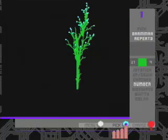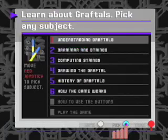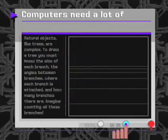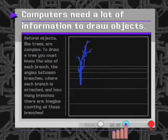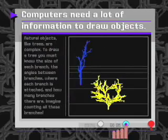Instead of going right to level 2, let's learn a little more about the concepts behind Graftals. Computers normally need a lot of information to draw complicated objects, and natural objects, like trees, are quite complex.